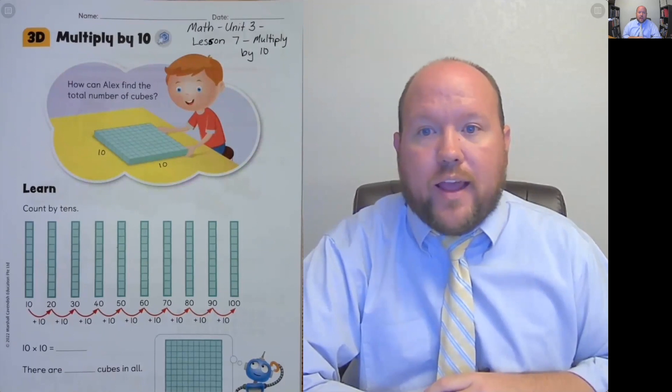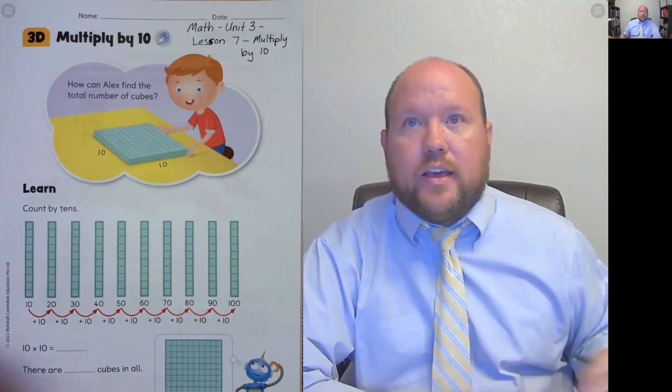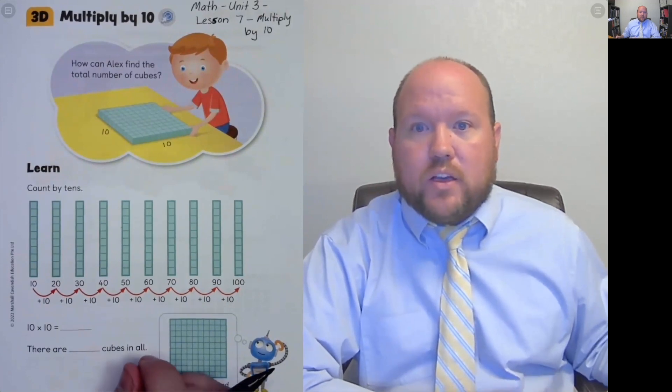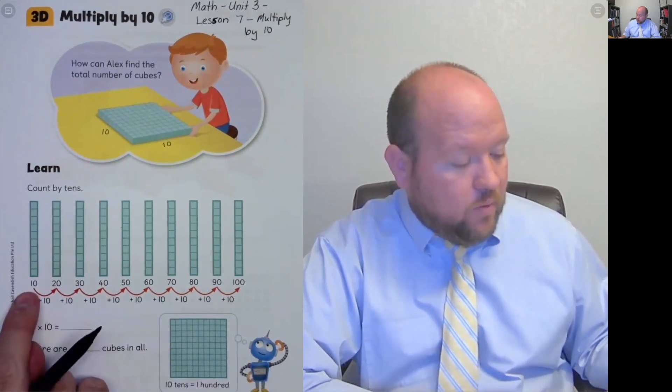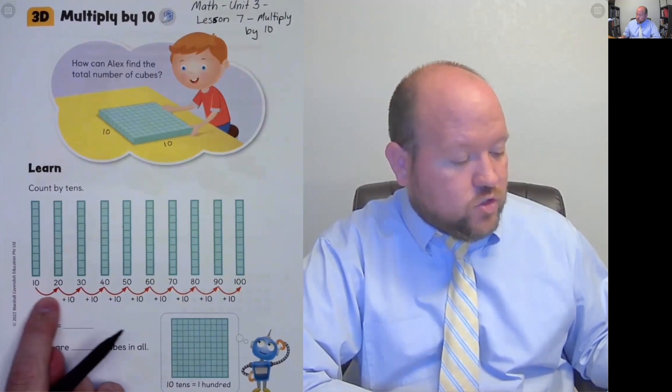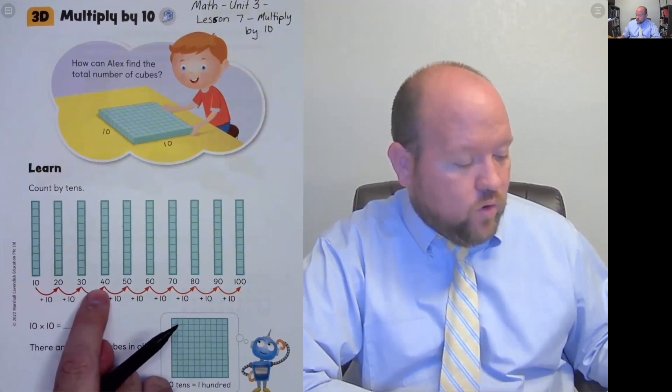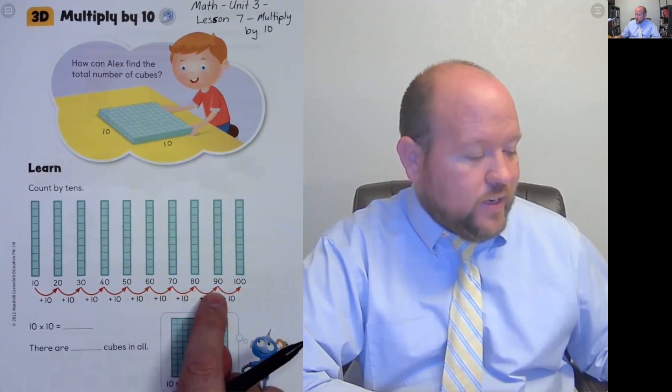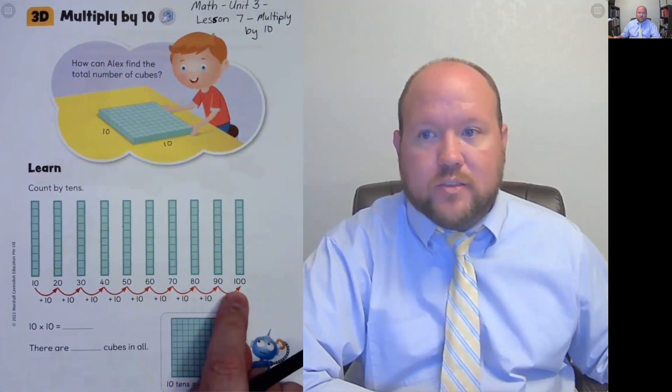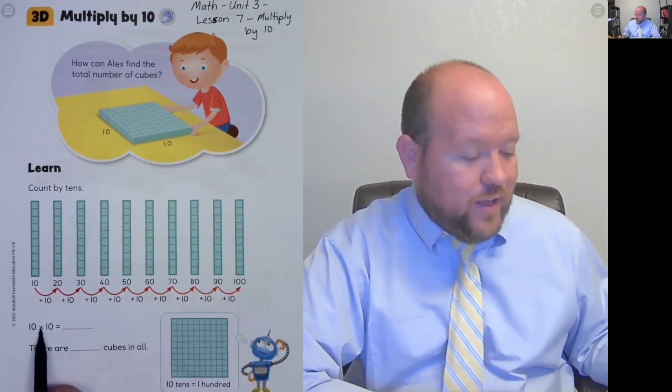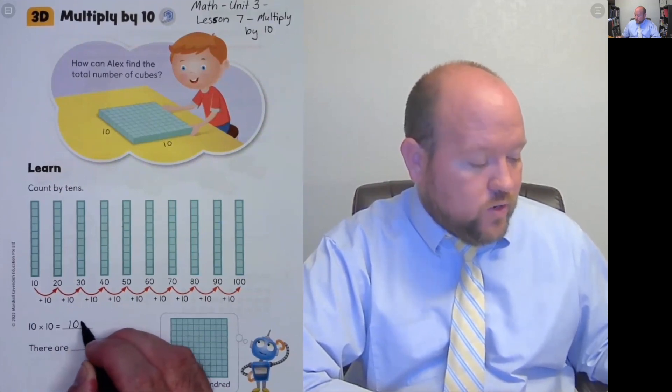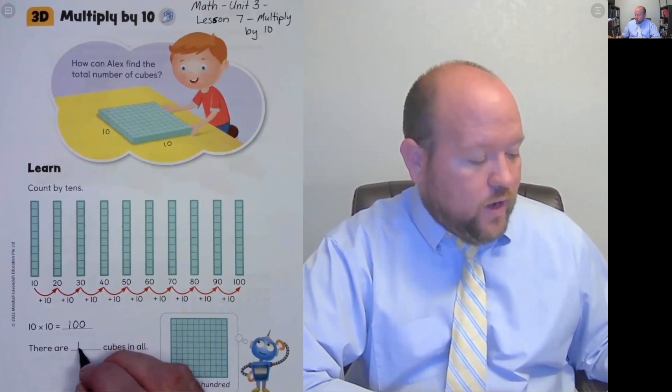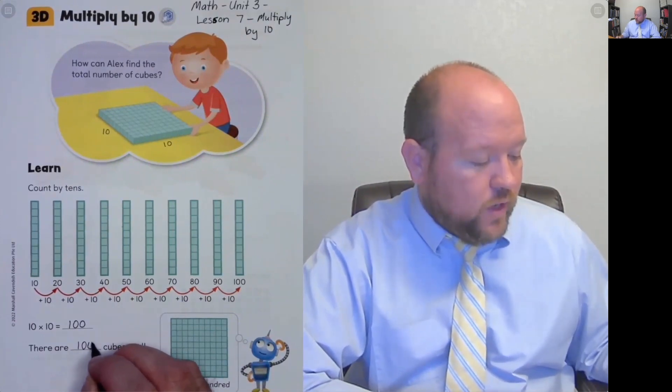So how would we figure that out? The book has already helped us understand that. One thing we can do here is just count by 10s. 10, 20, 30, 40, 50, 60, 70, 80, 90, 100. And so 10 times 10 equals 100. So there are 100 cubes in all.